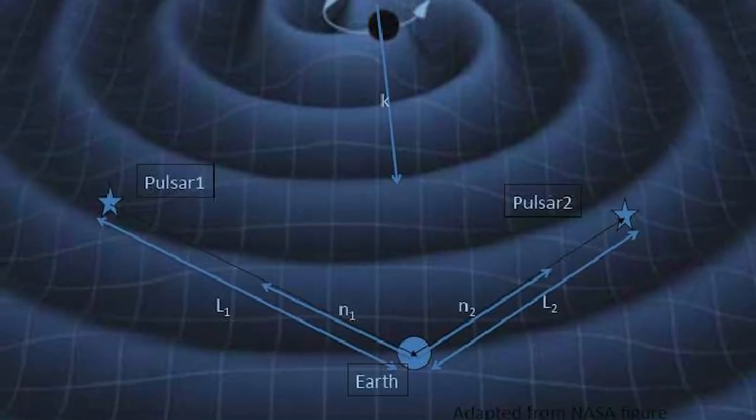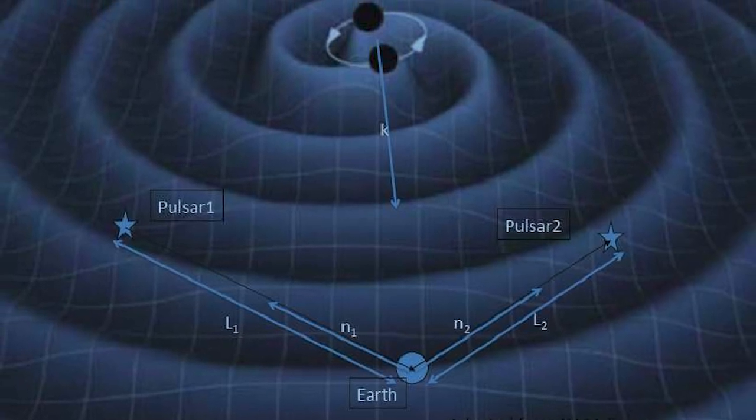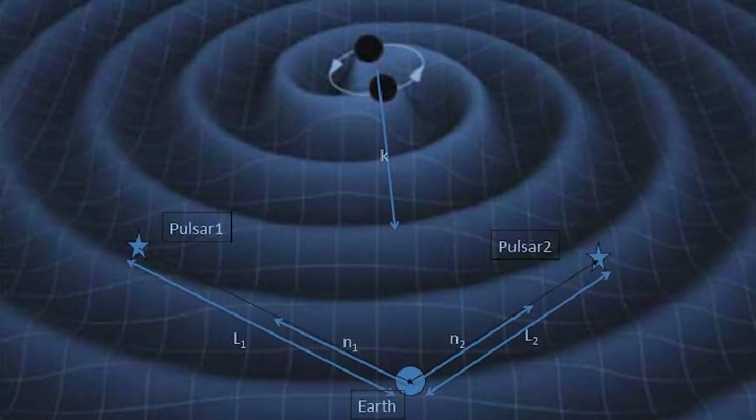And this is the key idea behind pulsar timing arrays. The arrays does not refer to an array of telescopes, but an array of pulsars that you're all observing simultaneously. Maybe every once a week or so you're going to measure each individual pulsar. From that you'll build up a map. And then as gravitational waves wash through the earth, wash through the galaxy, you're going to see correlated changes in the timing of pulsars. Now this is a great idea. Just like LIGO, astronomers have been working on this for decades.